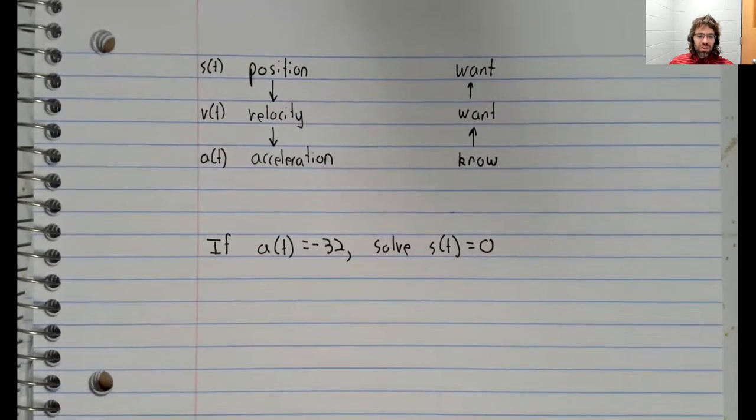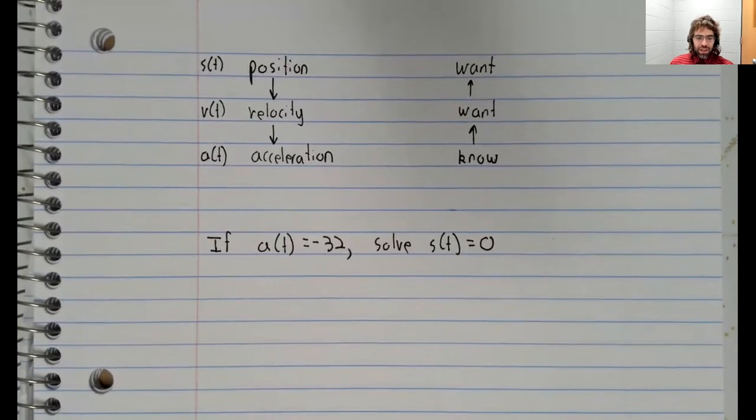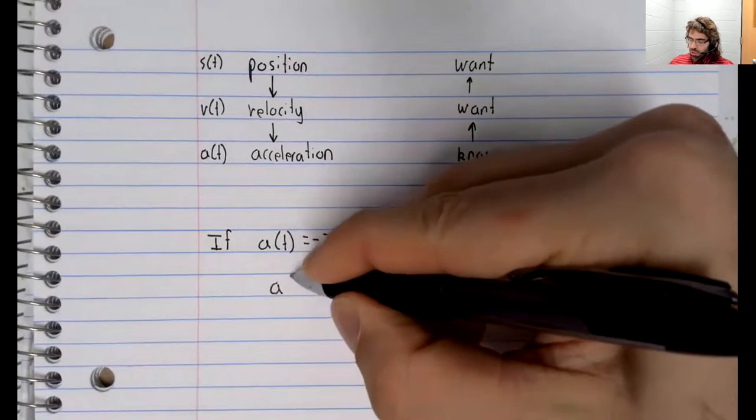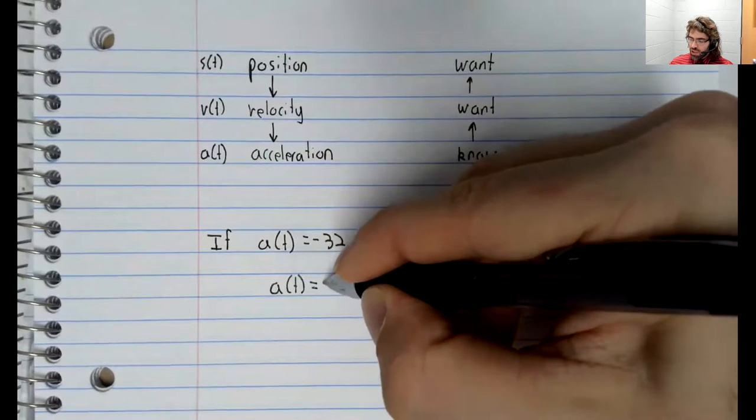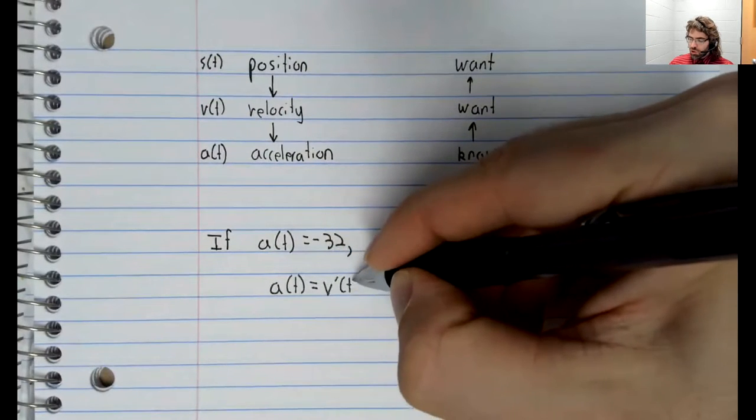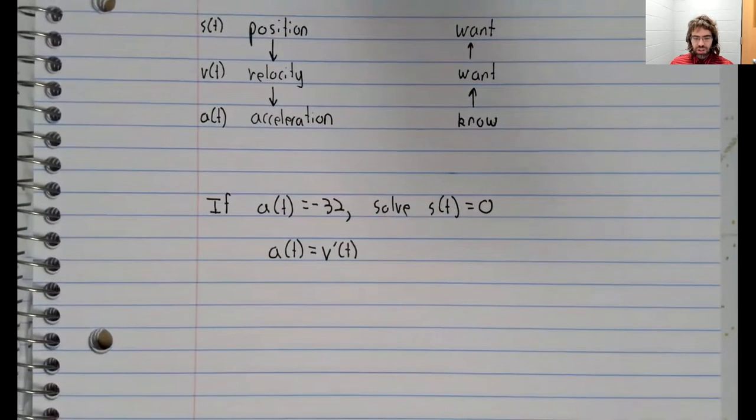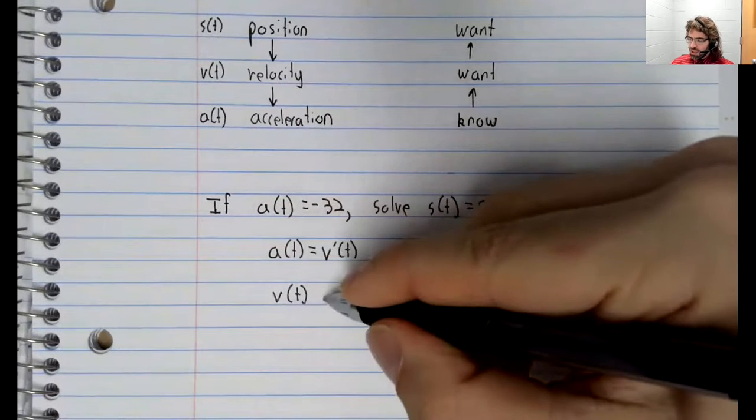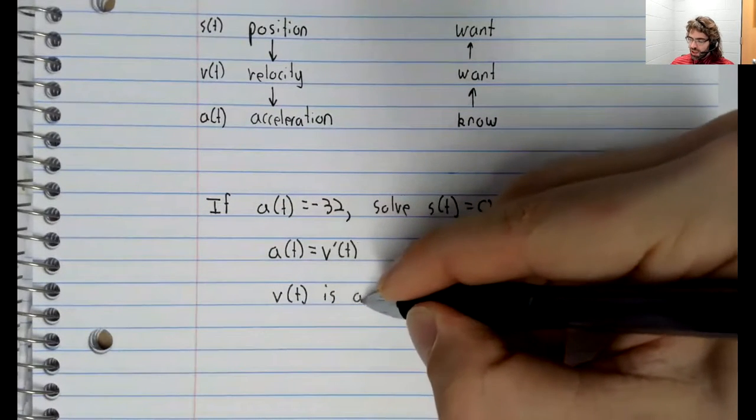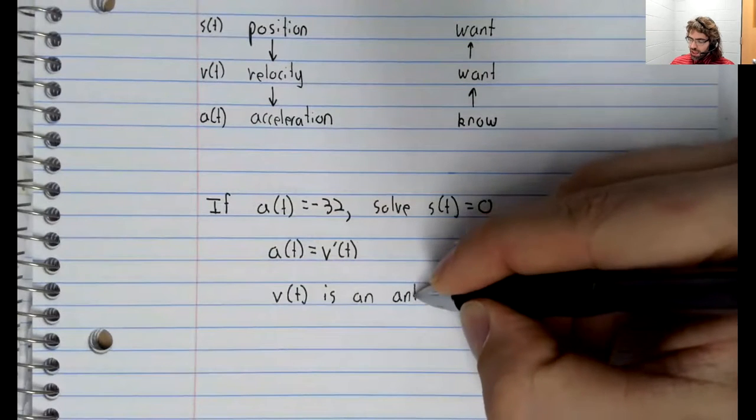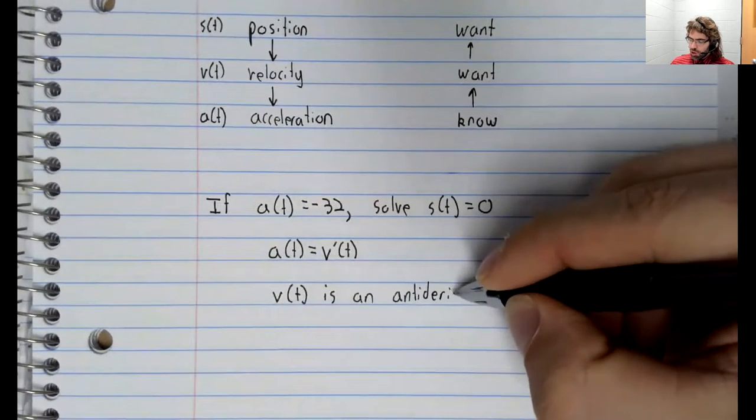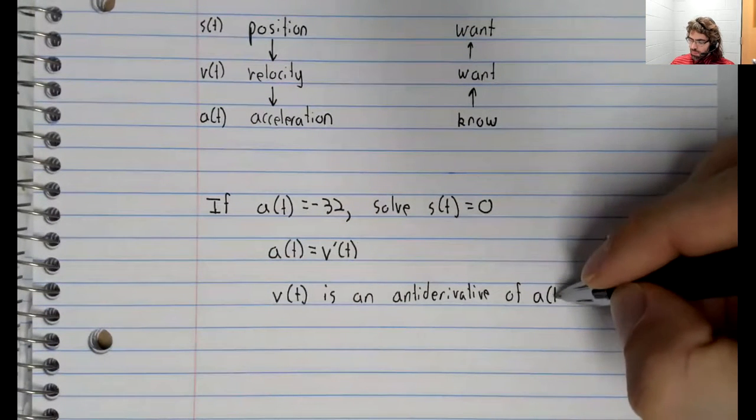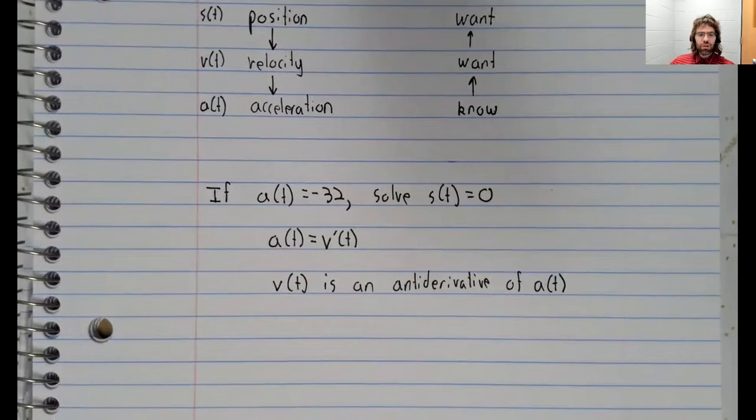And we'll do that via antiderivatives. So let's start. We know that the acceleration function is the derivative of the velocity function, reframing that v of t is an antiderivative of a of t.